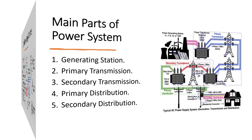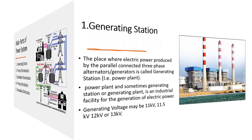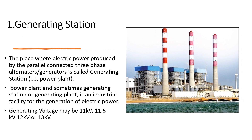The main parts of this power system are the generating station, transmission system, and distribution system. The place where electric power is produced by parallel-connected three-phase alternators or generators is called a generating station, or power plant. A power plant, sometimes called a generating station or generating plant, is an industrial facility for the generation of electric power.